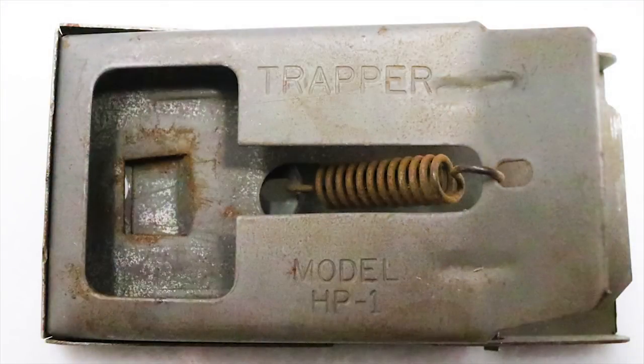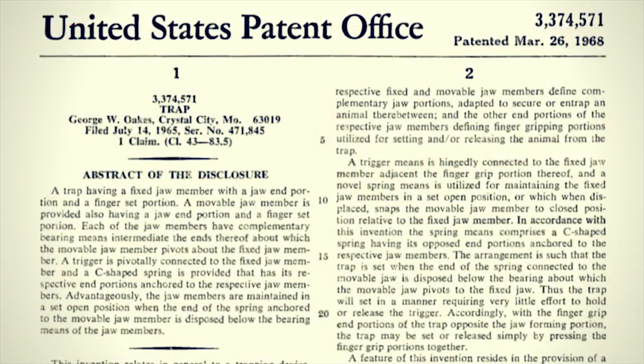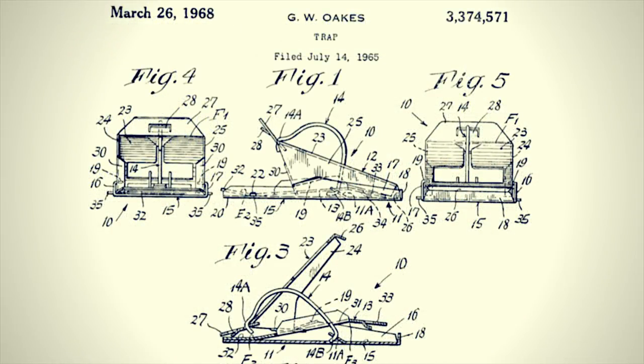This mousetrap has a real simple name. It's called the Trapper and it was first patented by George Oaks of Crystal City, Missouri on March 26, 1968.